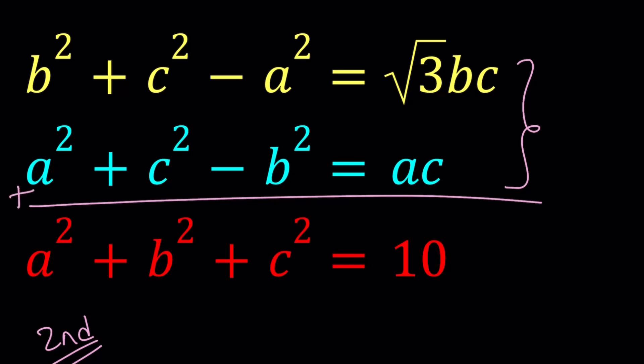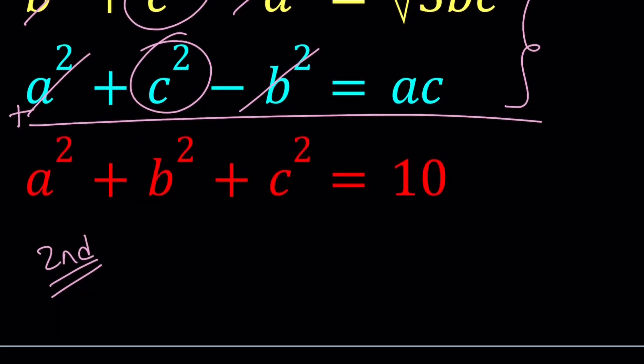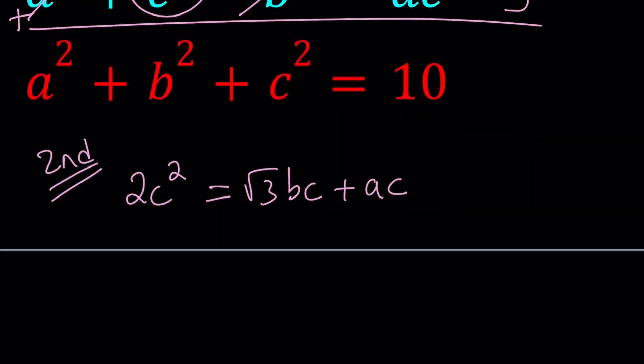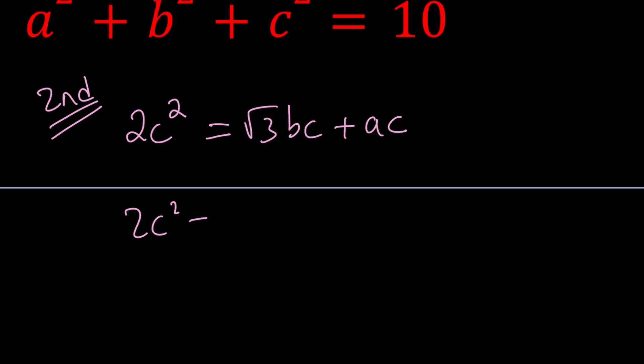Let's go ahead and add these equations up. Notice that a² is going to cancel out, b² is going to cancel out. We're going to get 2c². On the right hand side, we're going to have √3bc + ac. We can factor out a c on the right hand side: 2c² = c(√3b + a).